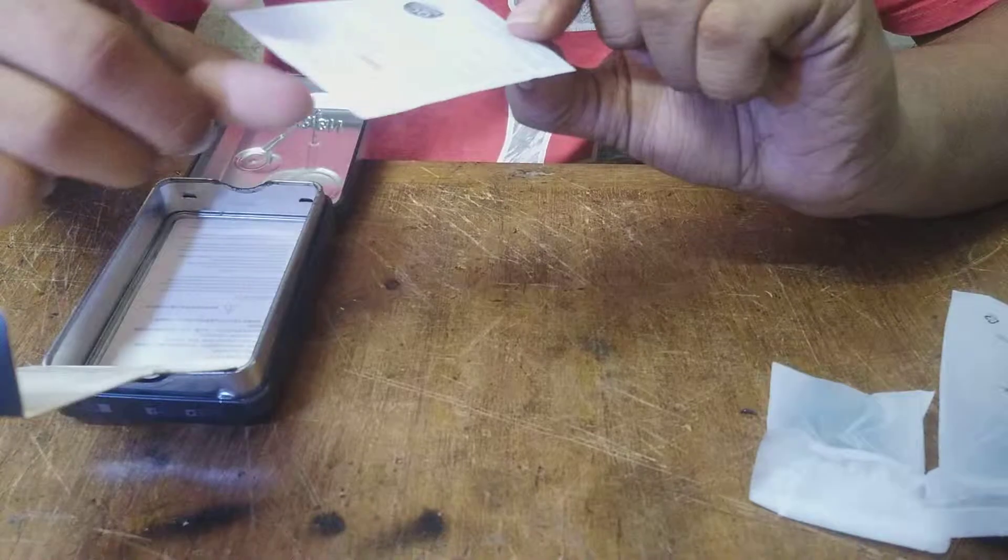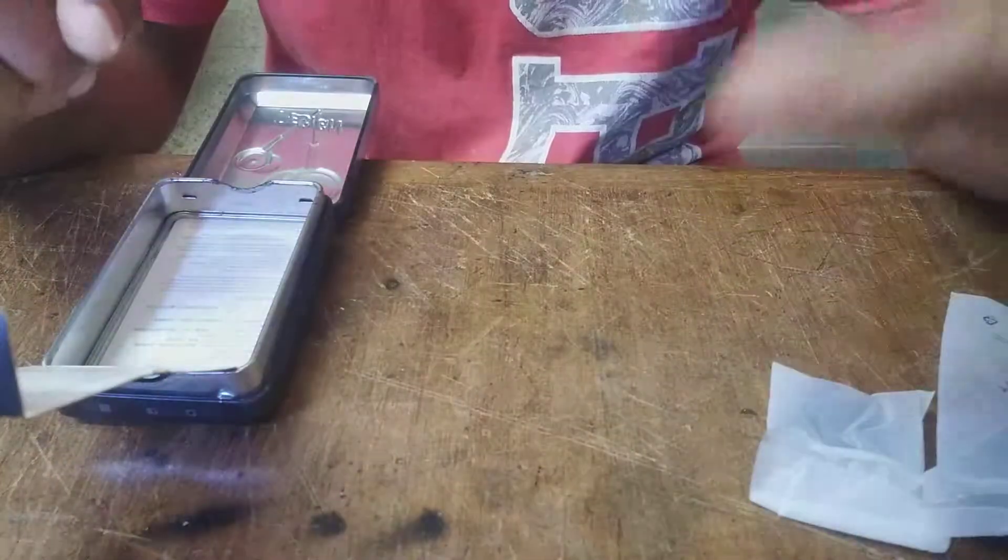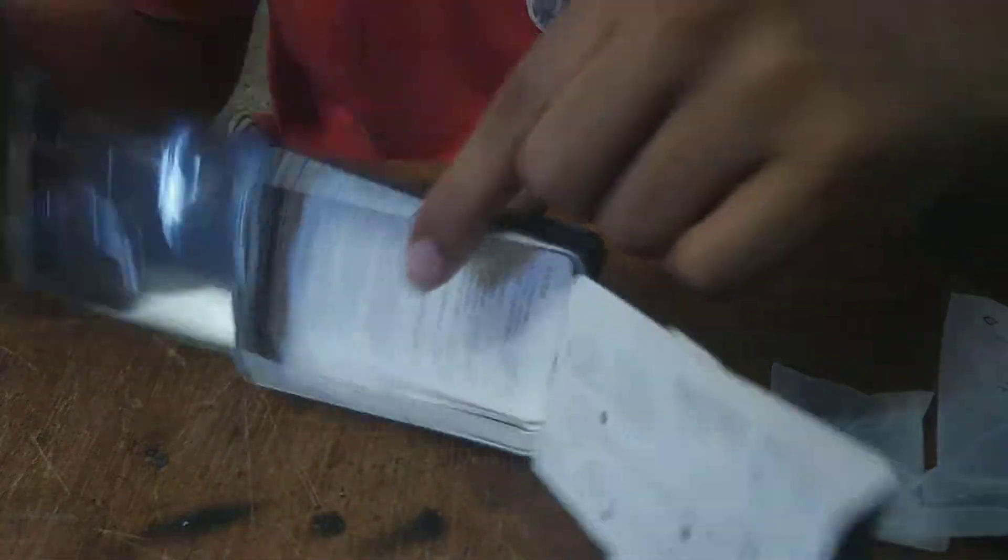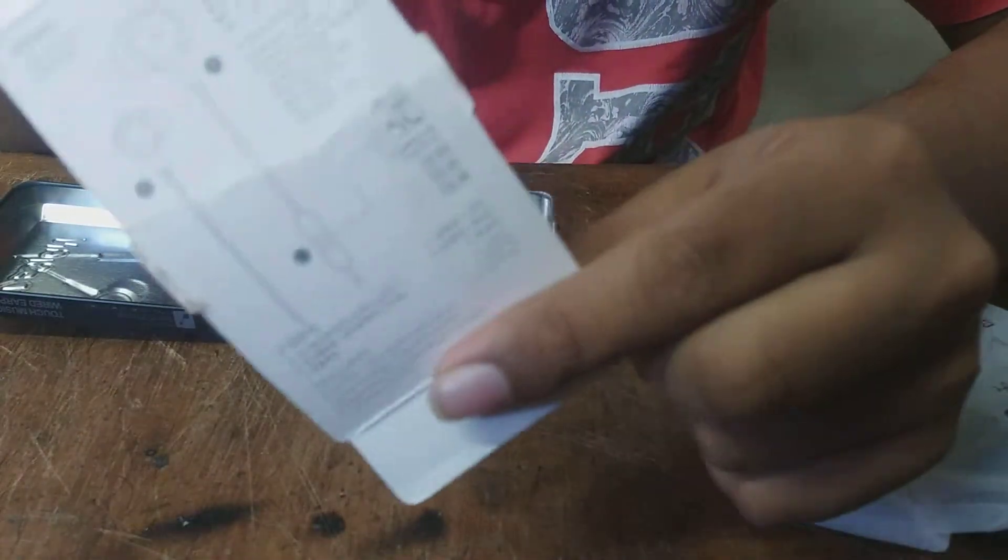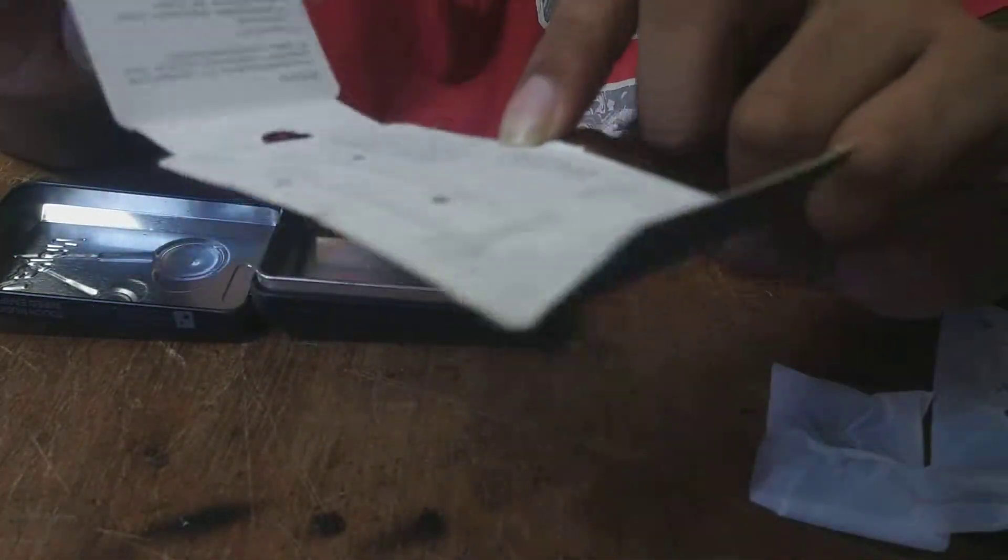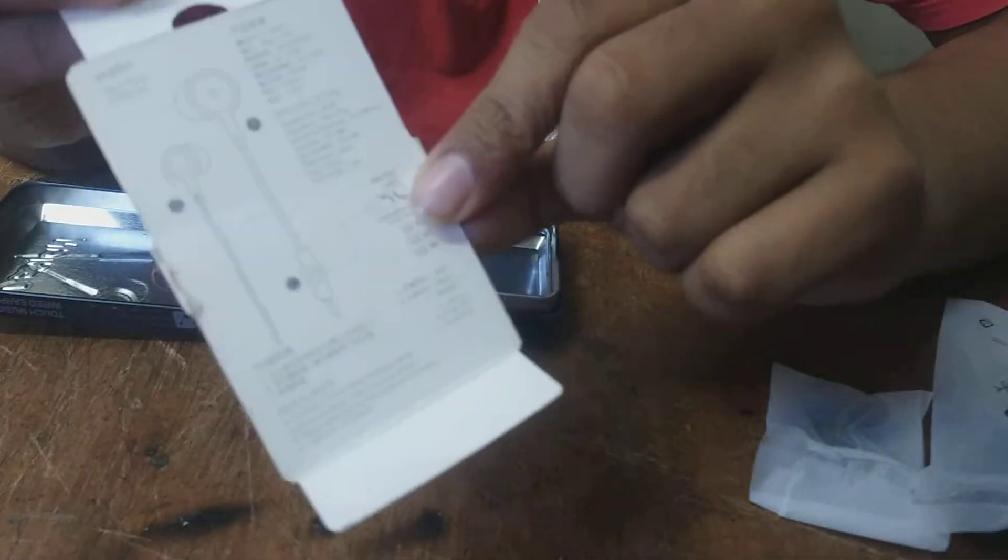The earphone comes with a certification that it is certified to use. This is the certificate of it, let's keep it aside. This is how it looks from inside, this is the catalog. Over here you can see the earphones. Things are written in Chinese on it, so I can't read it.